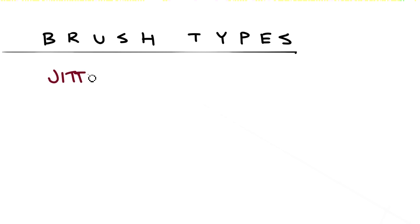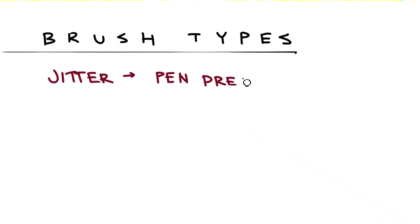The next aspect of digital brushes that you need to understand is jitter. Jitter just refers to a change that occurs in the brush based on specific actions. This action could be velocity, angle, or any number of things. However, the only one we need to care about is pen pressure — pressing harder or lighter with our stylus will alter the brush in some way.